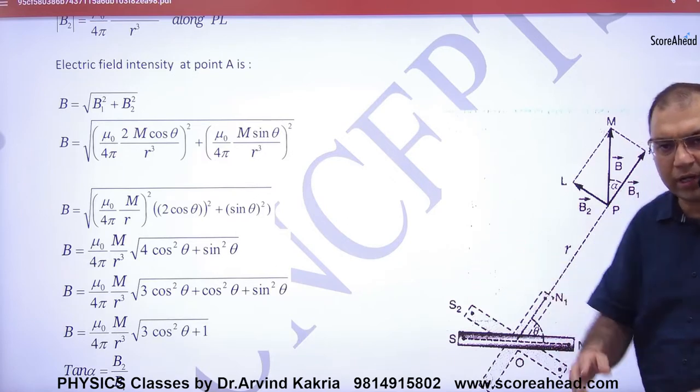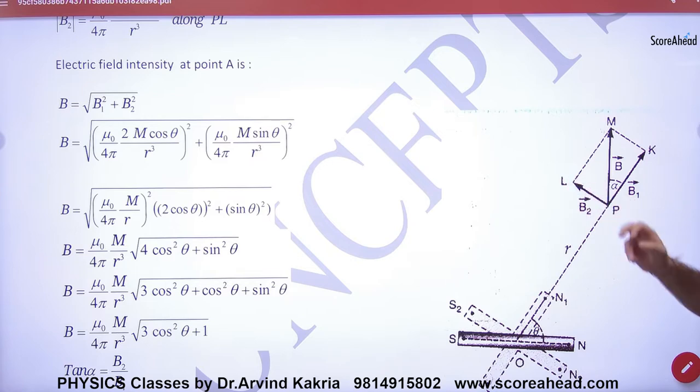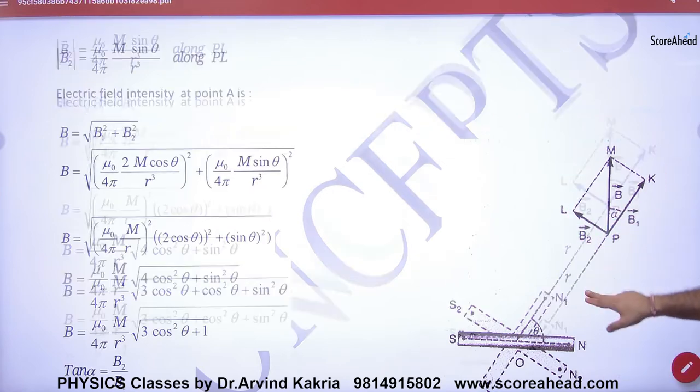We had to draw the same diagram. Remember that it was B-axial, it was B-equatorial. And what was the net answer? Under root of B-axial and B-equatorial.